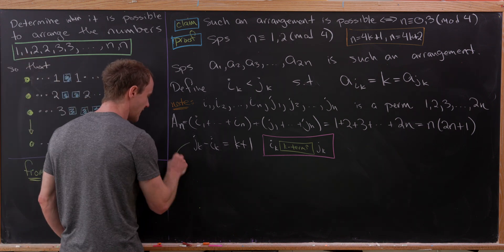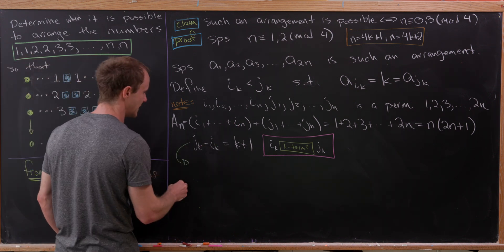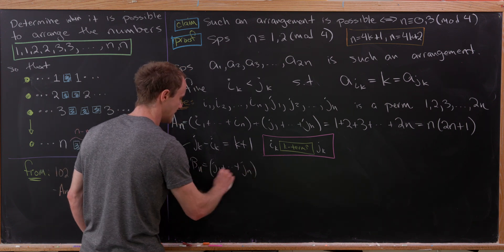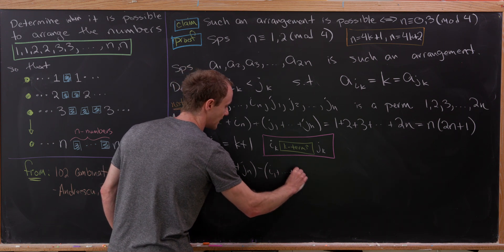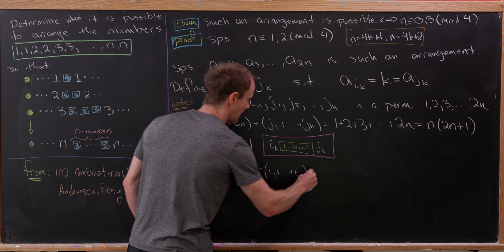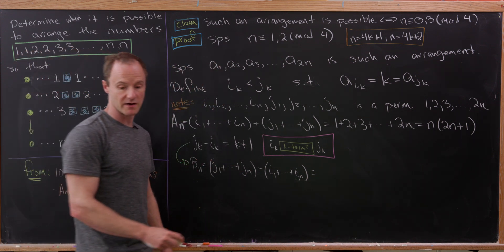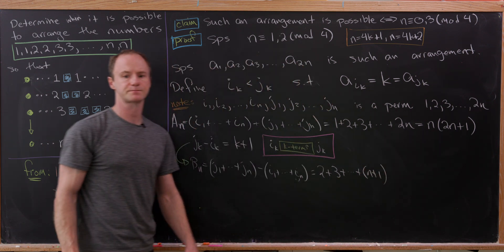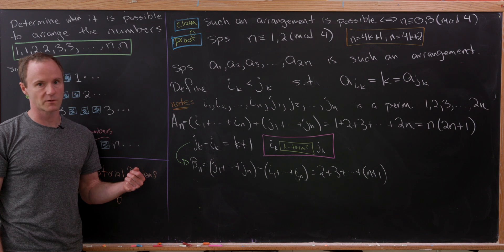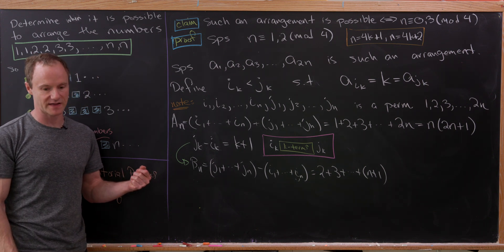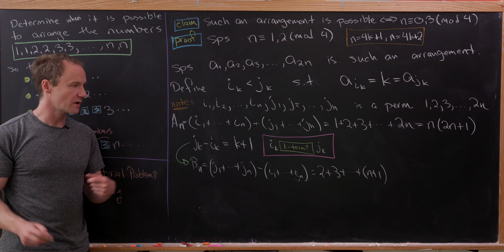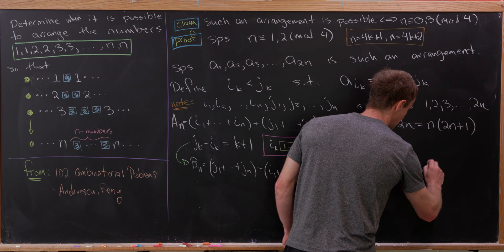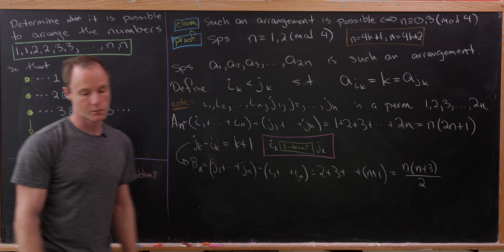From there, we can look at something kind of related to this A sub N, and that is B sub N. I'm going to write that as J sub 1 added up to J sub N minus I sub 1 added up to I sub N. And observe that because of this rule right above, that's equal to 2 plus 3 all the way up to N plus 1. But there's a closed form for a triangular number. After some fairly simple arithmetic or symbolic manipulation, we get this as N times N plus 3 over 2.